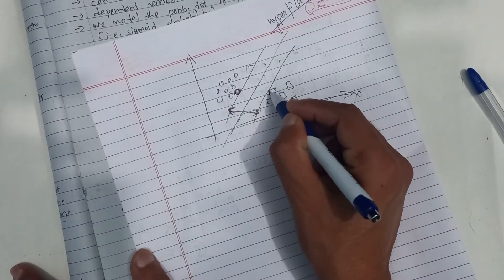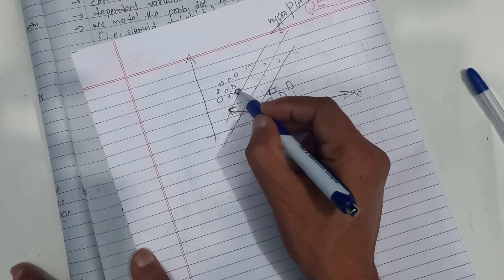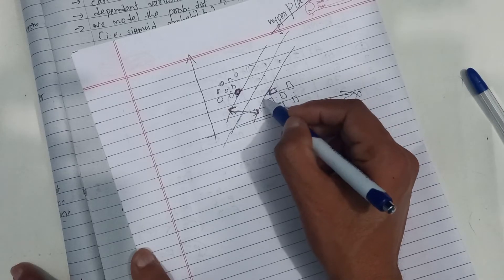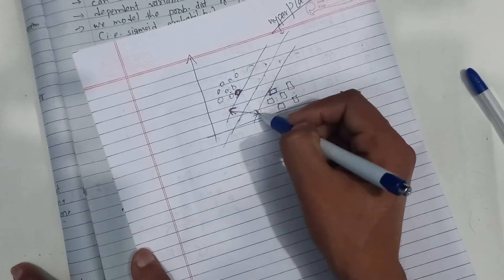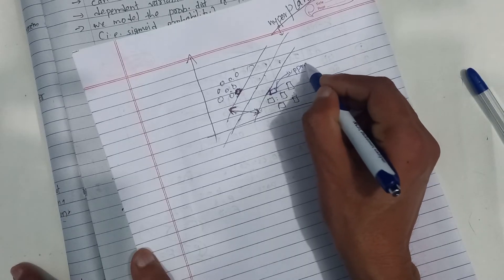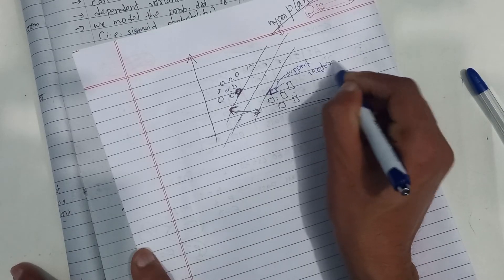If we consider this point, we have to make this line. And if we consider this line, we have to make this point. Just like we consider that we have to make this marginal line. What is the support vector? It is a support vector. This is a support vector.